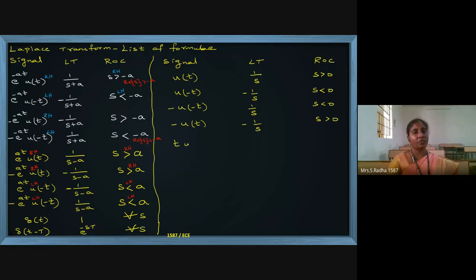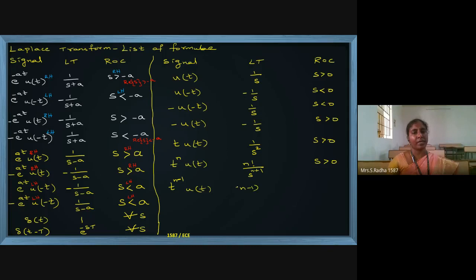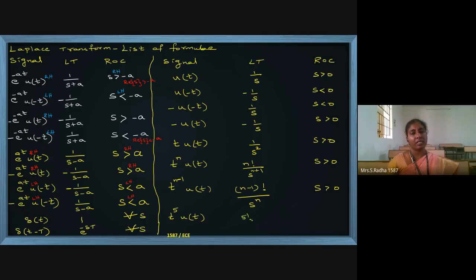If I have t times u(t), the Laplace is 1 by s squared, with s greater than zero. If I have t^n times u(t), it is n factorial by s^(n+1) and ROC is s greater than zero. For t^(n-1) times u(t), it is (n-1) factorial by s^n. For example, t^5 times u(t) gives 5 factorial by s^6, with s greater than zero.